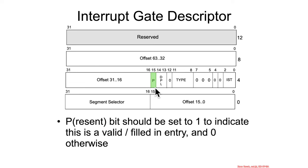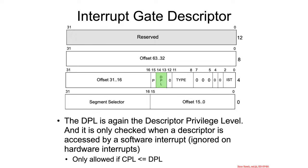The present bit, as before, indicates whether or not anything here is valid, and if it's zero and someone tries to use it, that'll cause an error. DPL is, again, the descriptor privilege level, and this is going to be checked when a software interrupt is occurring, not when a hardware interrupt occurs.